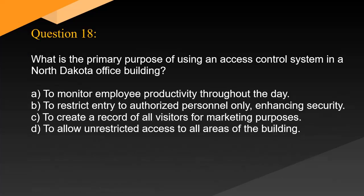Question 18. What is the primary purpose of using an access control system in a North Dakota office building? A: To monitor employee productivity throughout the day. B: To restrict entry to authorized personnel only, enhancing security. D: To allow unrestricted access to all areas of the building.